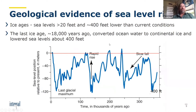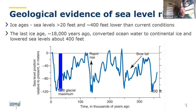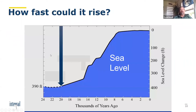What is the geologic evidence of sea level rise? Going through ice cores, you can see that over the last 350,000 years, sea levels have been 20 feet higher than present and 400 feet lower. The last ice age, about 18,000 years ago, converted a lot of ocean water into continental ice, lowering ocean levels about 400 feet. As it melts, we see sea level rising. How fast could it rise? About 24,000 years ago, sea level was almost 400 feet lower than present.